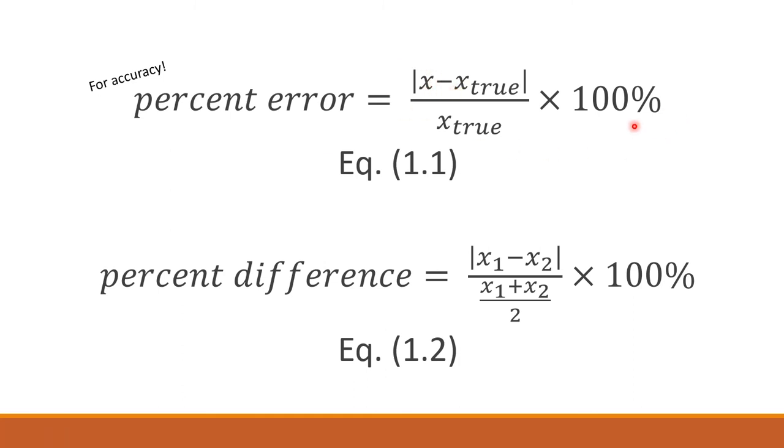That is why you calculate the percent error and the percent difference. Percent error is usually for accuracy. Why is it for accuracy? Because this equation here - x is the measured value. This is the value that was made by the student or scientist, what they calculated or measured with a ruler, microscope, or something.